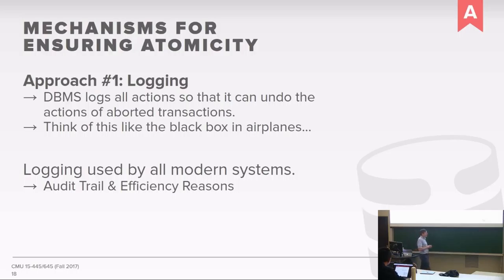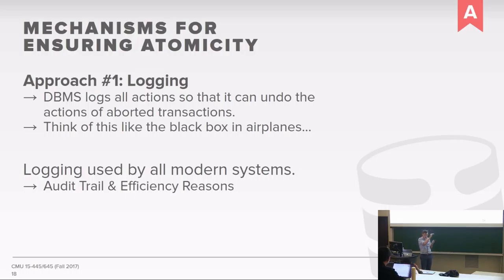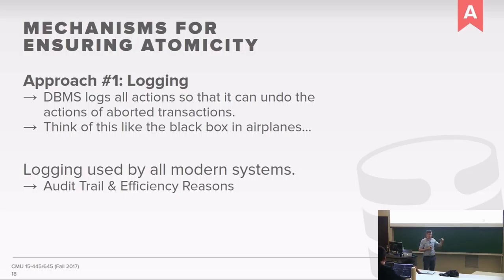The two ways to ensure atomicity are through logging or shadow paging. With logging: every single time we make a modification to the database, we write into a log file recording the change made to that particular tuple. The key idea is we want to apply changes to the log before applying them to the actual database pages. That way, if we crash, we come back, look in the log, see what was happening at the time of the crash, and check whether changes in our heap files should be there or not. Think of it like a black box in an airplane — when it crashes, you look at the log to see what was going on.